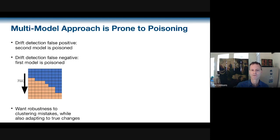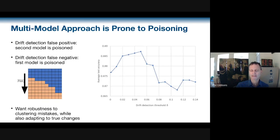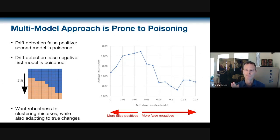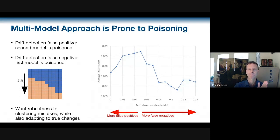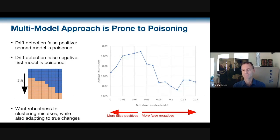Drift detection is always based on some threshold that must be set, and in staggered-change settings there is really only one good value for the threshold delta. Everything to the left of that value is polluted by false positives from hair-triggered detection, and everything to the right is poisoned by missed drifts with more false negatives. This is not a good situation.